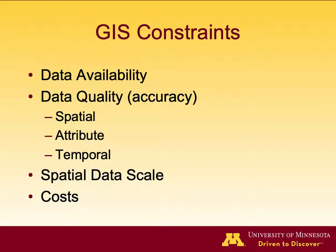GIS is very useful but also has constraints. Data availability is one constraint — for example, collecting soil data points requires budget. Data quality in three dimensions — spatial, attribute, and temporal — is another constraint; a satellite image layer may have relatively lower spatial quality. Spatial data scale and costs are also constraints, with budget being the main limiting factor.